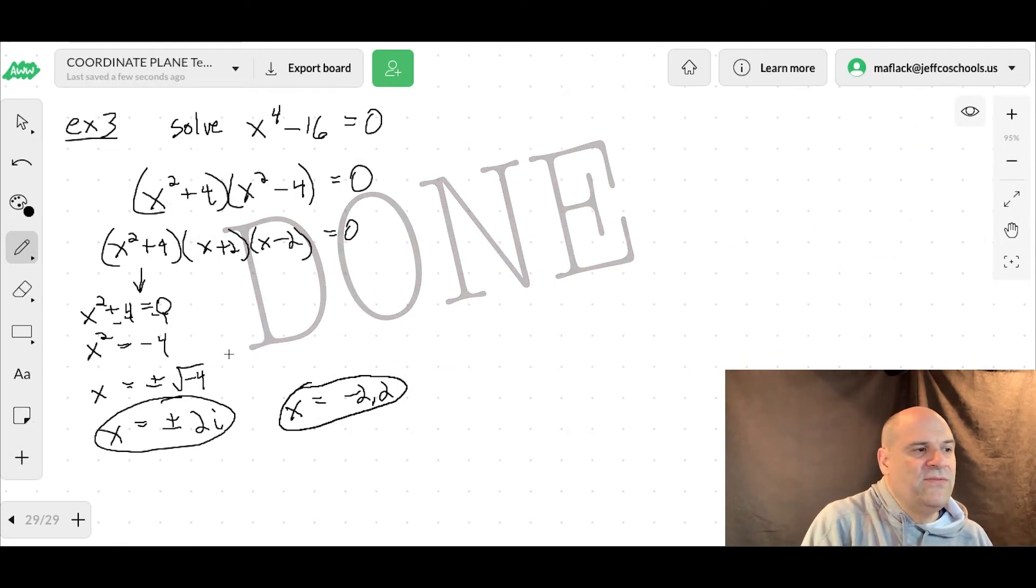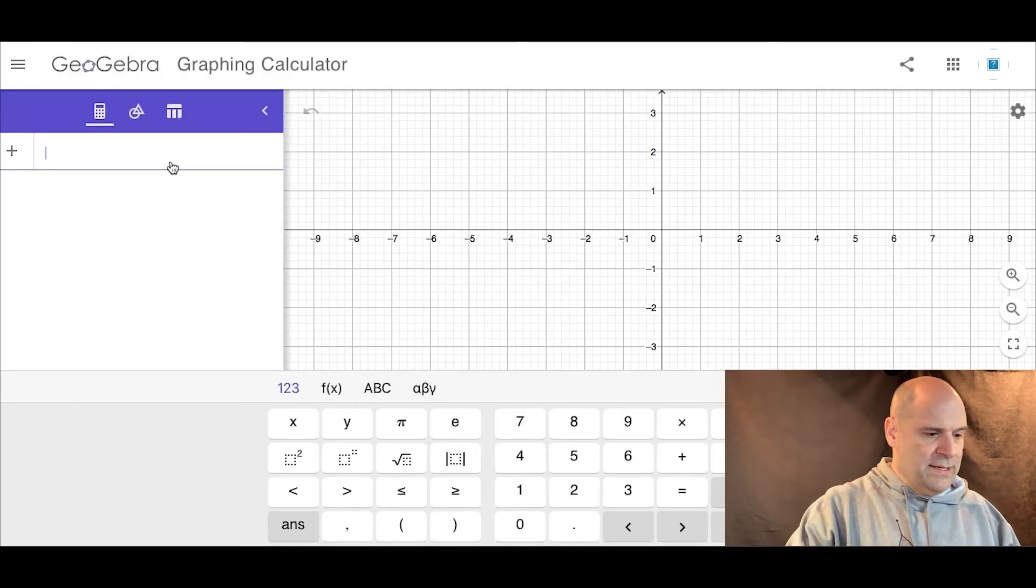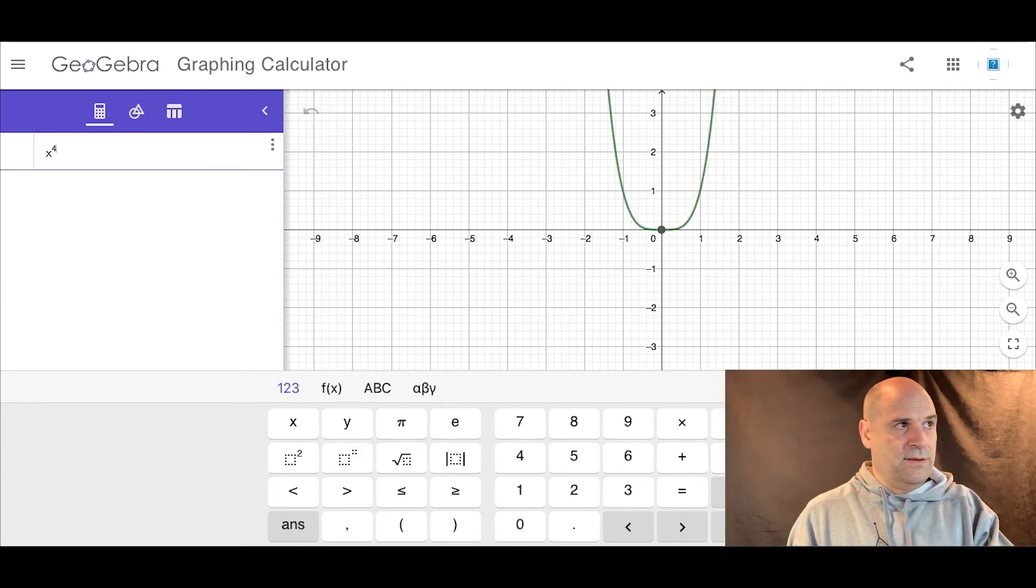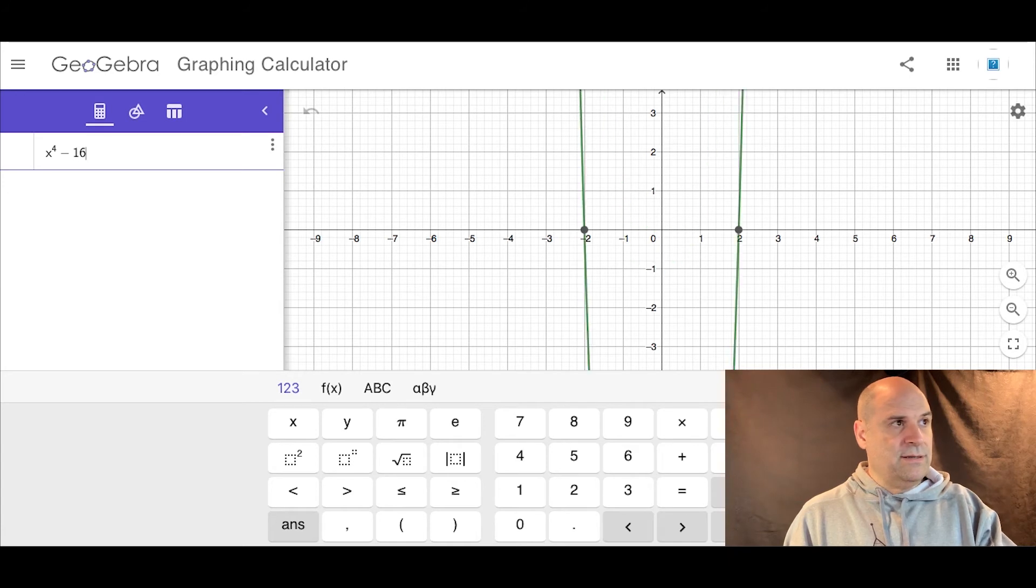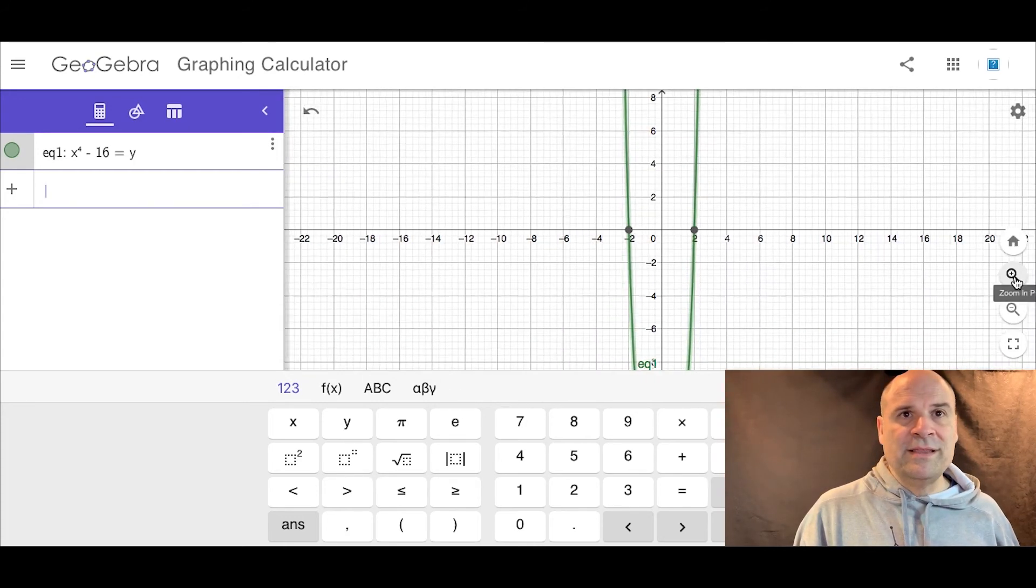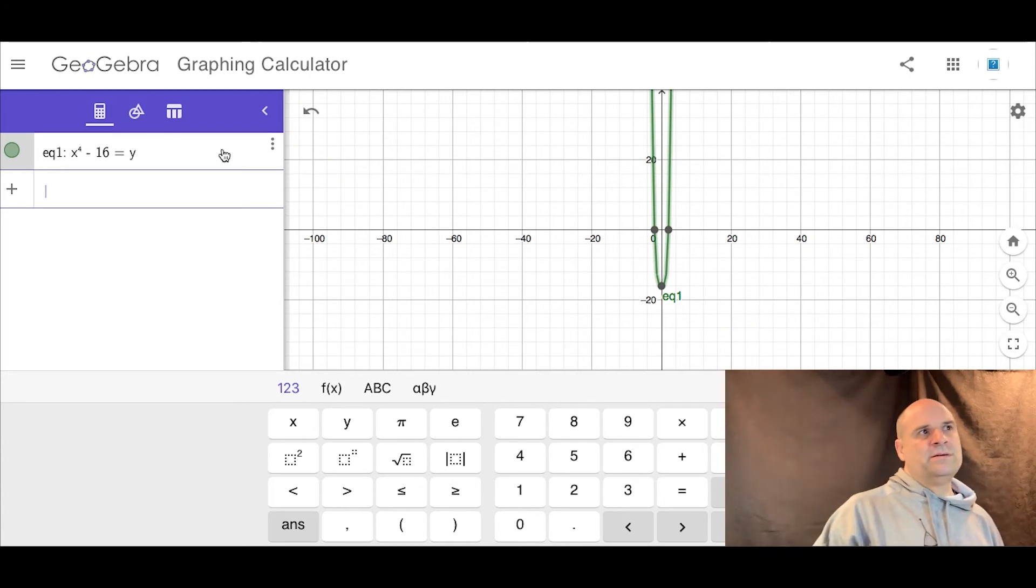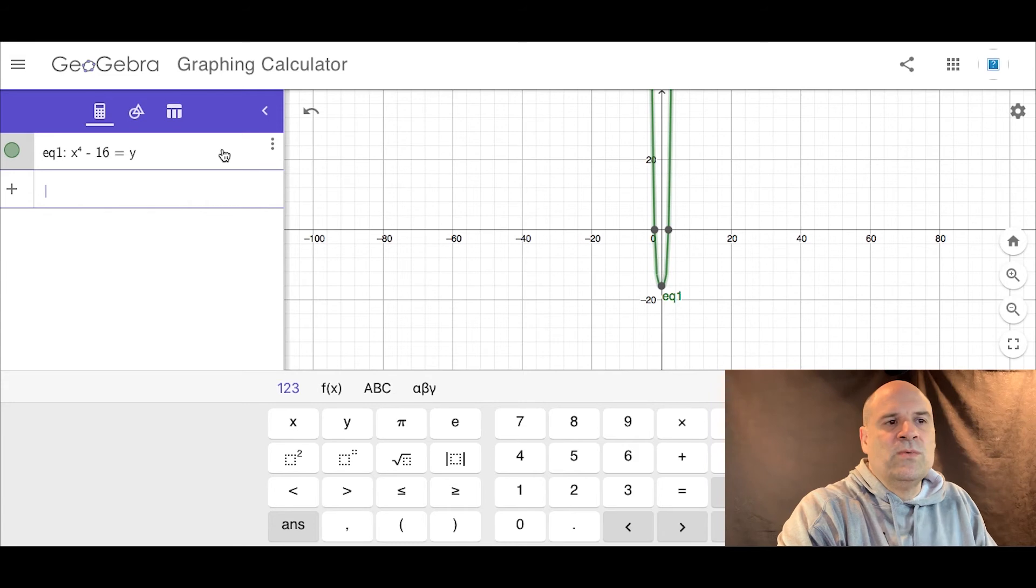So example 3b says, verify these roots graphically. That sounds bad. Graphically, that's weird. So here's our equation. x to the 4th minus 16 equals 0. Same thing. So what we're going to do is we're going to graph this. So let's go over to our graph, our GeoGebra, GeoGebra.org. Great website, lots of calculators. So we're going to type it in x to the 4th minus 16 equals y. So you can see that our roots where y equals 0 are at negative 2 and 2. So you can always plug that into your calculator and see where it crosses the x-axis, where y equals 0.